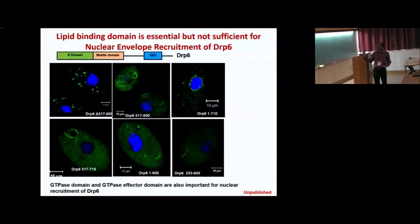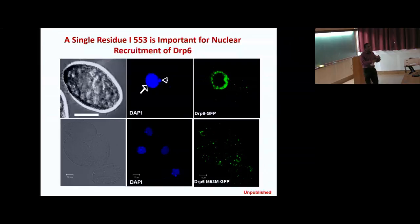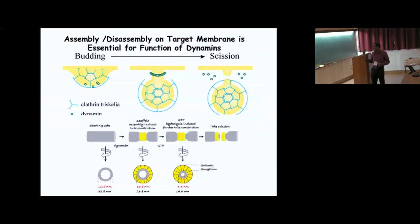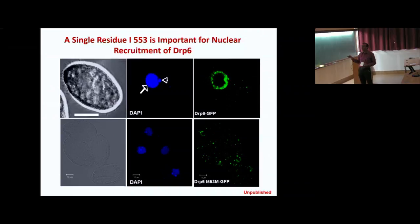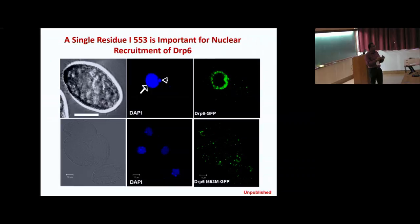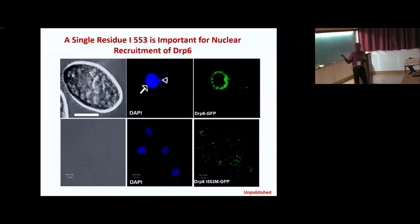We know lipid binding is important for nuclear recruitment, but what in the nuclear envelope brings DRP6 there? We found a serendipitous result — when cloning DRP6, one clone when expressed showed no nuclear localization. Sequencing revealed the sequence was entirely the same as DRP6 except for one residue: I553 in the membrane binding domain. This single mutation is required for nuclear membrane recruitment, so we used this mutant to investigate what property differs from wild type.